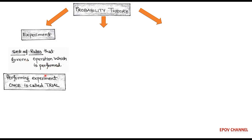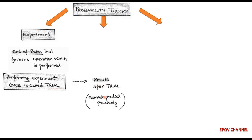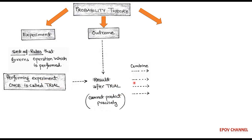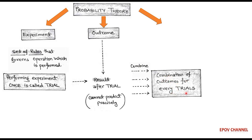When the experiment is performed one time, it is called a trial. After a trial, we get some results which cannot be predicted very precisely, and these results are called the outcome of an experiment. Within an experiment there are a number of trials, and corresponding to these trials there come a number of outcomes. After combining all such outcomes for every trial, we call it an event.